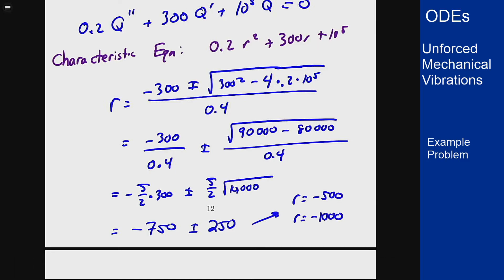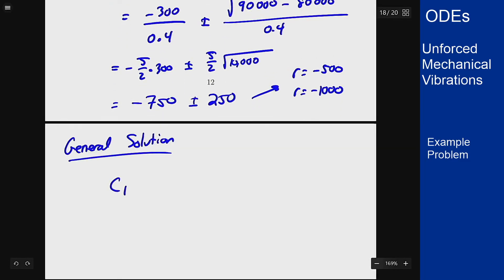So this is an overdamped system, we have two different real roots and so my general solution will be c1 e to the minus 500 t plus c2 e to the minus 1,000 t. And my initial conditions are q of 0 is 10 to the minus 6 and q prime of 0 is 0 because there's no initial current.